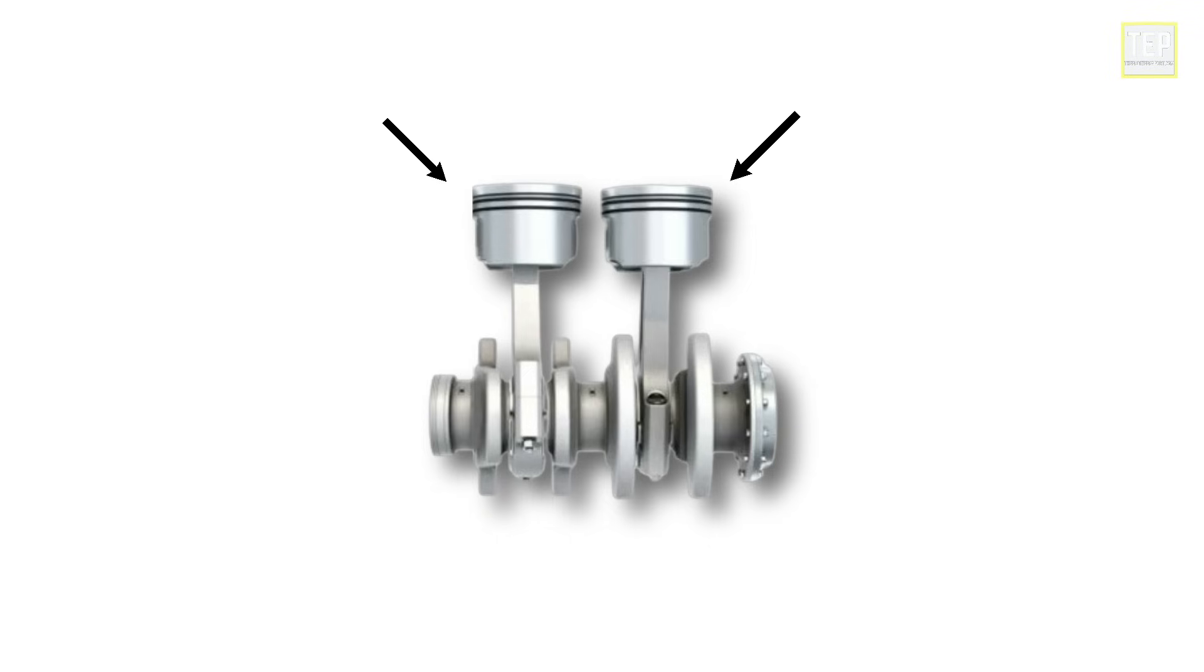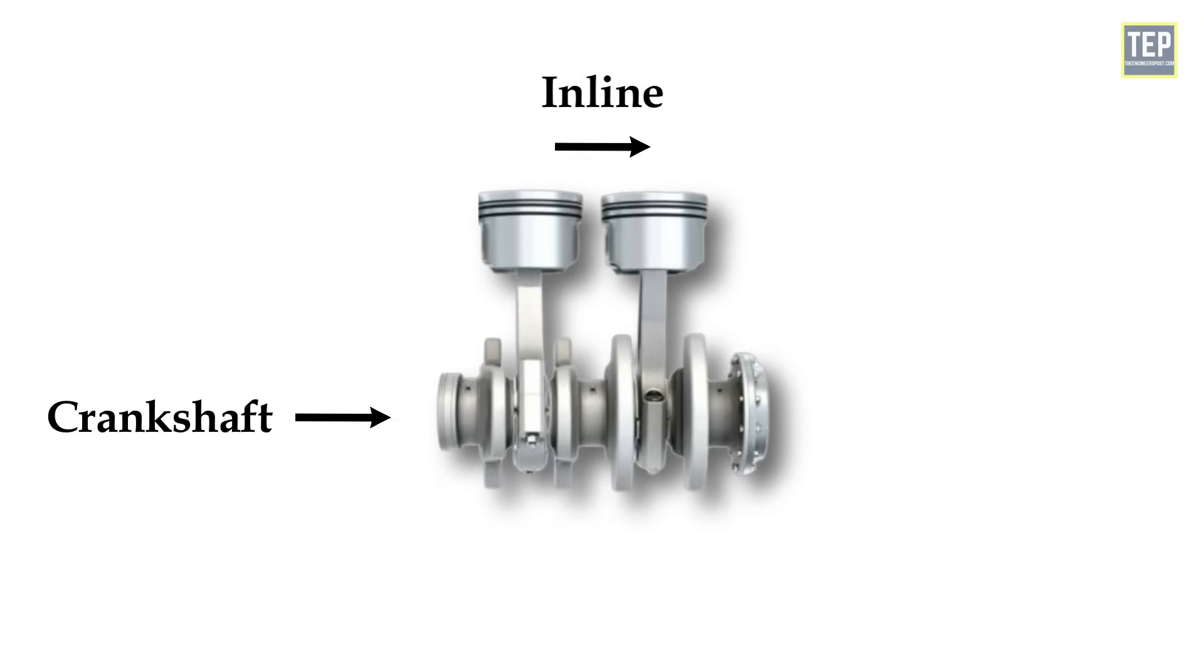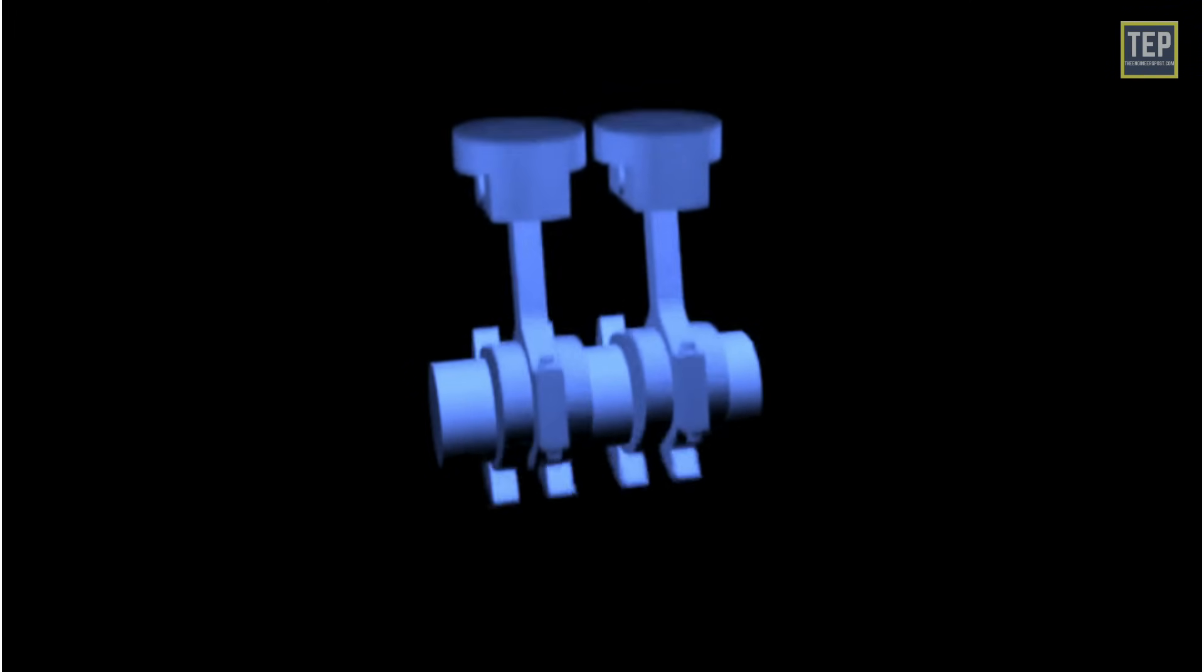It's a two-cylinder piston engine with cylinders arranged in a line along with a common crankshaft. Straight twin engines are primarily used in motorcycles.